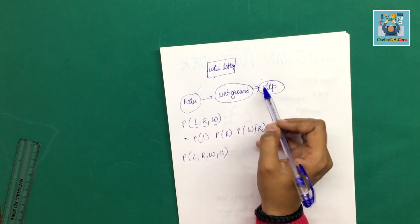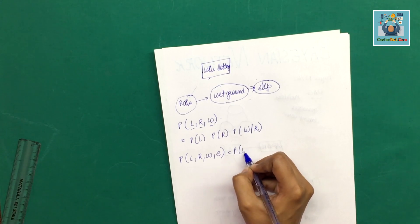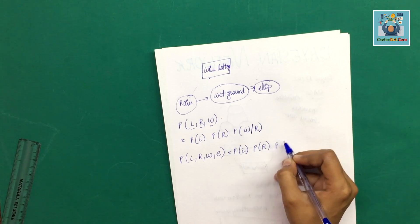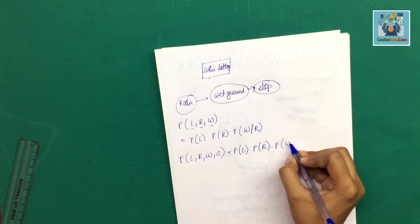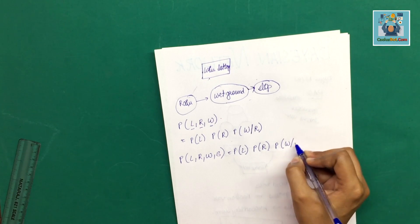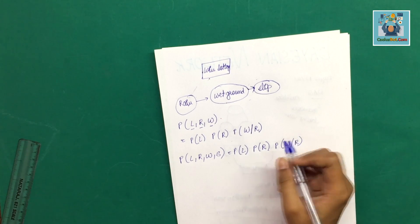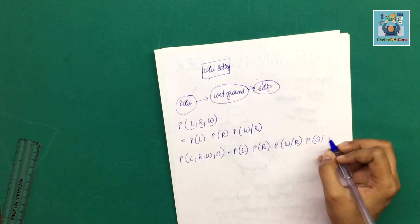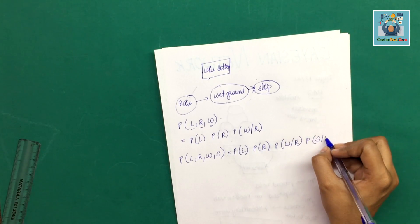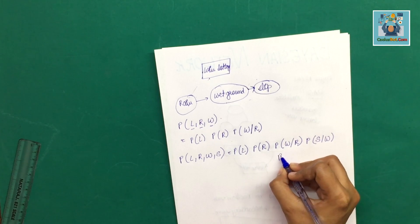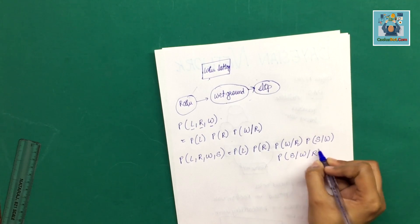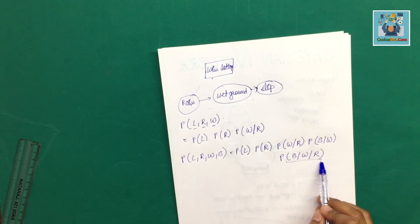What happens in these four? First, we have lottery probability. Then we have a different probability of rain. The wet ground depends upon rain - these are two combinations. And what's the probability of slip from wet ground? And what's the probability of SWR? If these three are connected, then these are three probabilities.